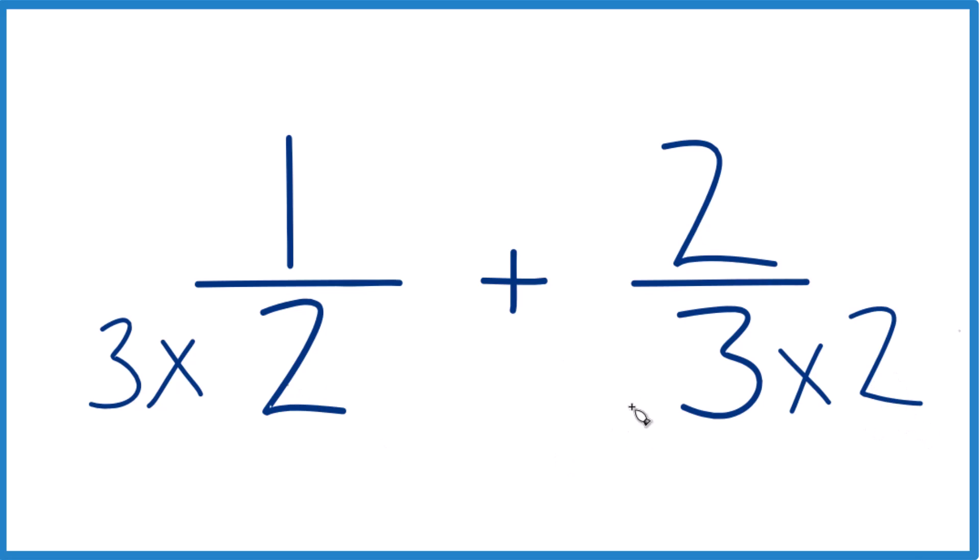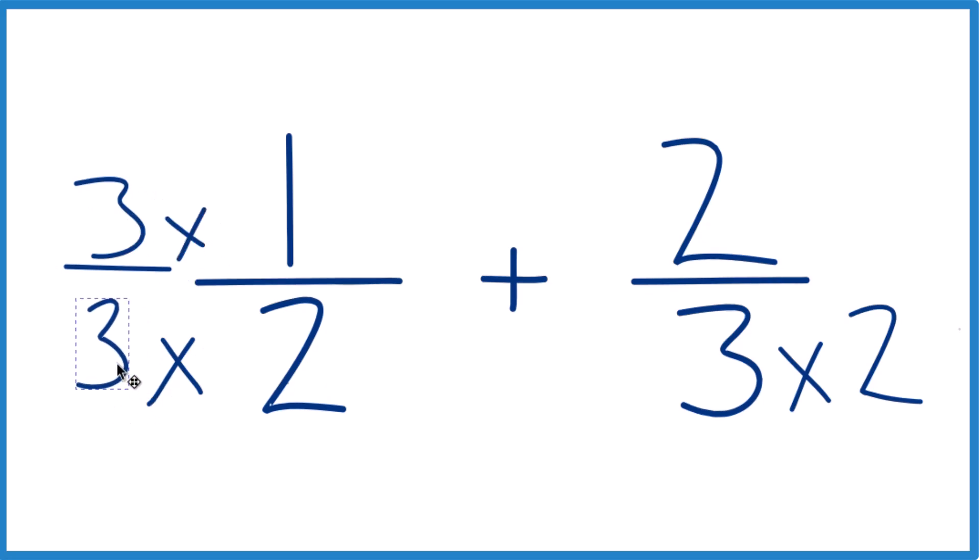That'll give us the same denominator. But we can't just multiply the denominator by a number. We need to also multiply the numerator by that number. It's because 3 over 3 is 1. So we're just multiplying by 1. We're not changing the value, just the way it's written.